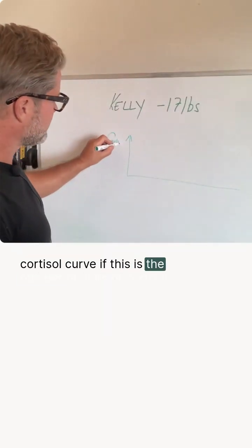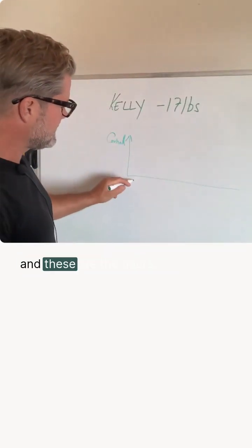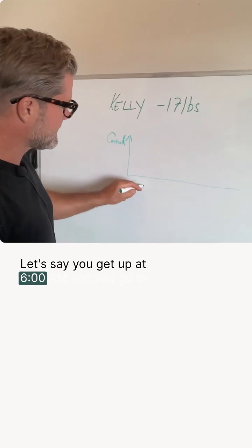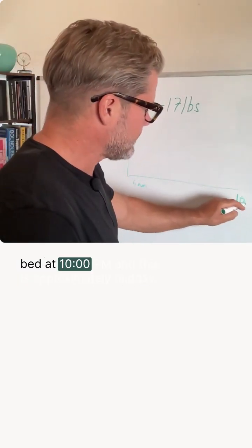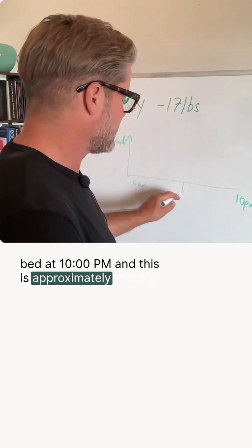A cortisol curve. If this is the number of units of cortisol and these are the hours, let's say you get up at 6am and you go to bed at 10pm and this is approximately midday.